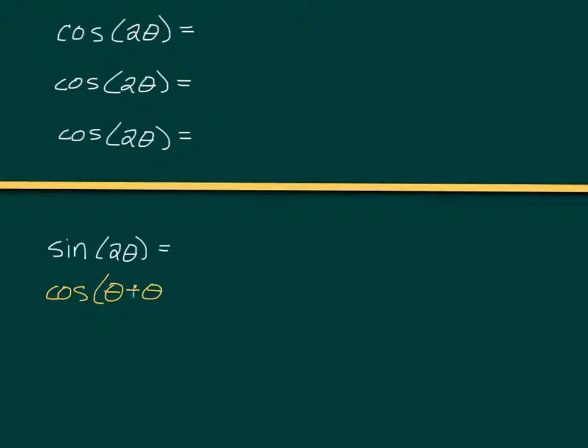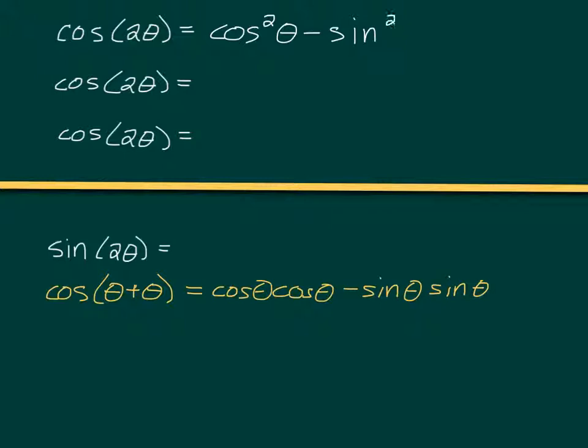If we think of cosine of 2θ as cosine of θ plus θ, from yesterday we have our formula for the sum. From yesterday, this is cosine θ, cosine θ, minus sine θ, sine θ, which we could rewrite as cosine squared θ minus sine squared θ.